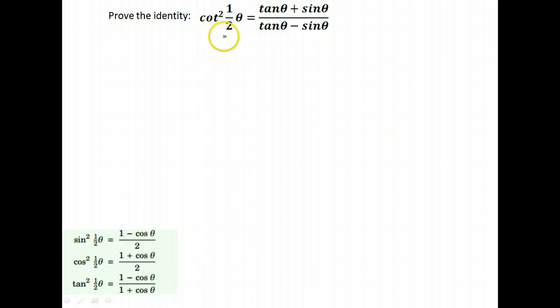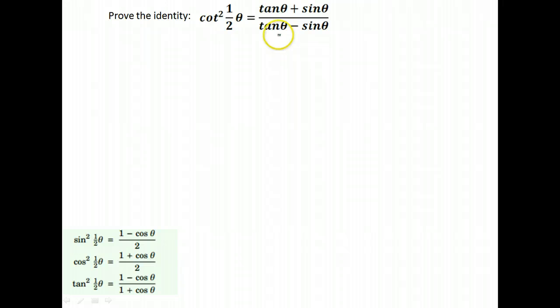Here's the first one we're going to take a stab at: tangent squared of one-half theta. We want to show that it's equal to tangent theta plus sine theta over tangent theta minus sine theta.